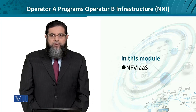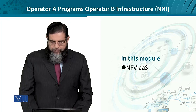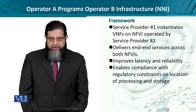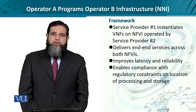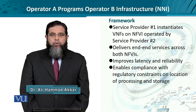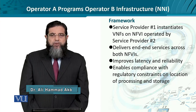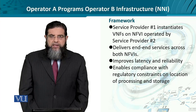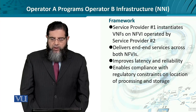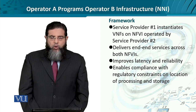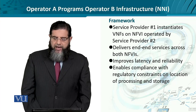This is known as the network function virtualization infrastructure as a service. The framework or rules of engagement are such that we have two service providers, A and B, or one and two. Service provider one instantiates virtual network functions on the NFV infrastructure of service provider two. Since the user or client is connected to the NFV infrastructure of provider one, it is the responsibility of service provider one to provide end-to-end services across both NFVIs.